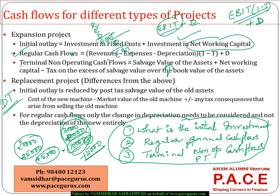Similarly, when looking at a replacement project, the differences are that the initial outlay will also include the proceeds from selling off the old equipment — the post-tax benefit I am getting by selling that old equipment. Sometimes I may sell it at a profit, or sometimes at something lesser than the book value, but whatever it is, that cash flow is also part of the initial outlay. Sometimes it may actually decrease the initial outlay by the extent of benefit received from selling the old equipment.